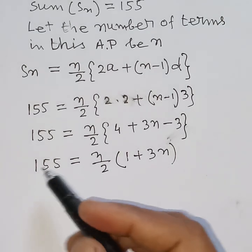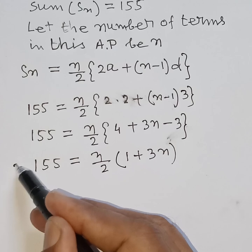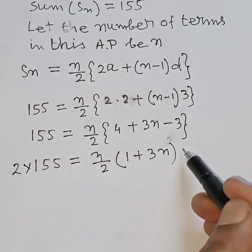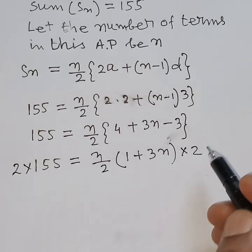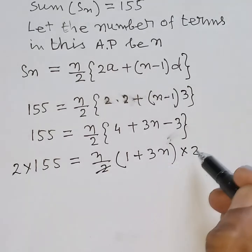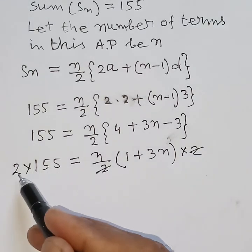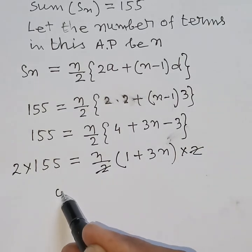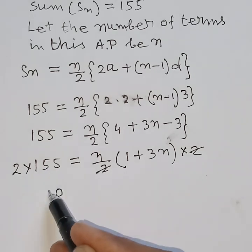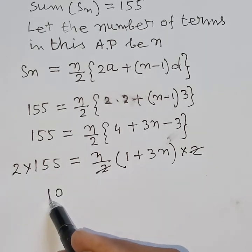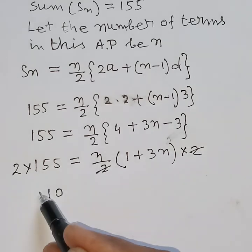Multiplying both sides by 2, the 2s cancel, giving 310 is equal to n into 1 plus 3n.